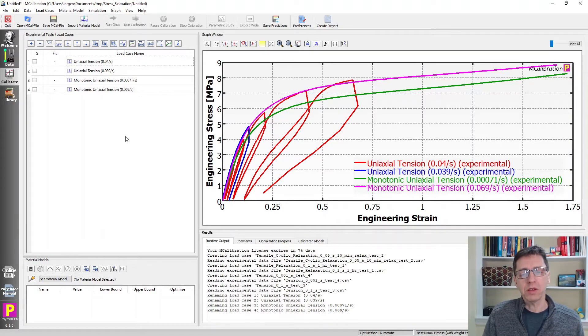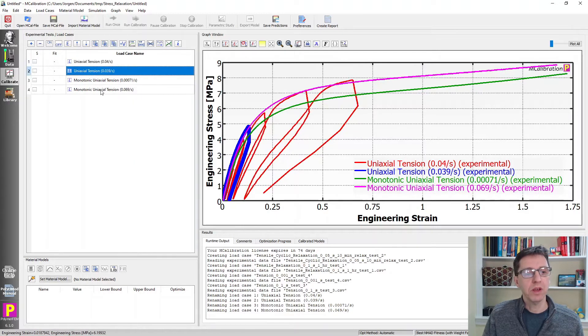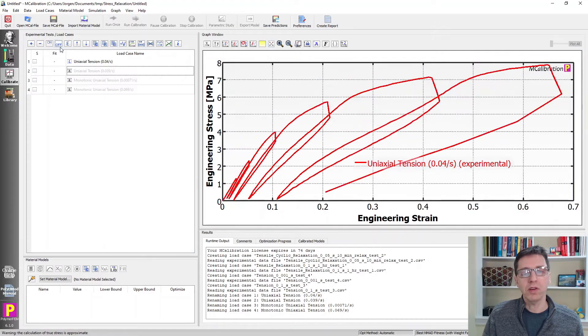The first thing I want to do is show you how you can extract the relaxation segments from one of these tests. I'm going to turn these off. In this case, we have one relaxation here for 10 minutes, 10 minutes, 10 minutes - six of them in this particular test.